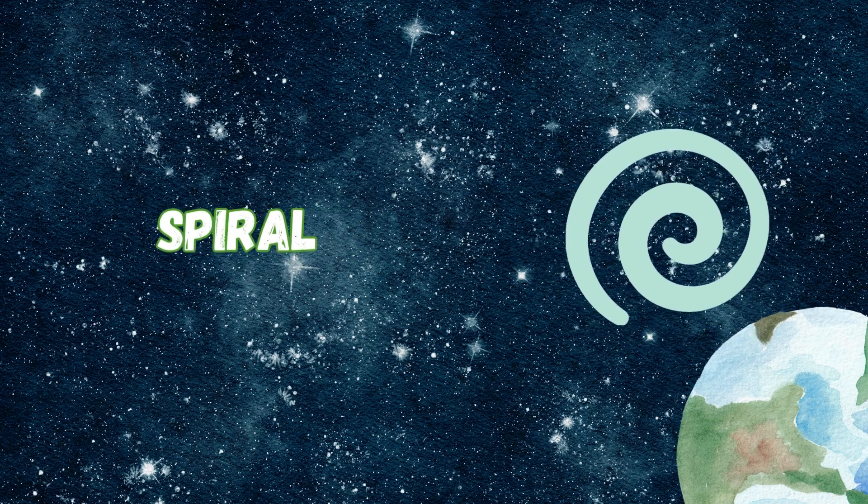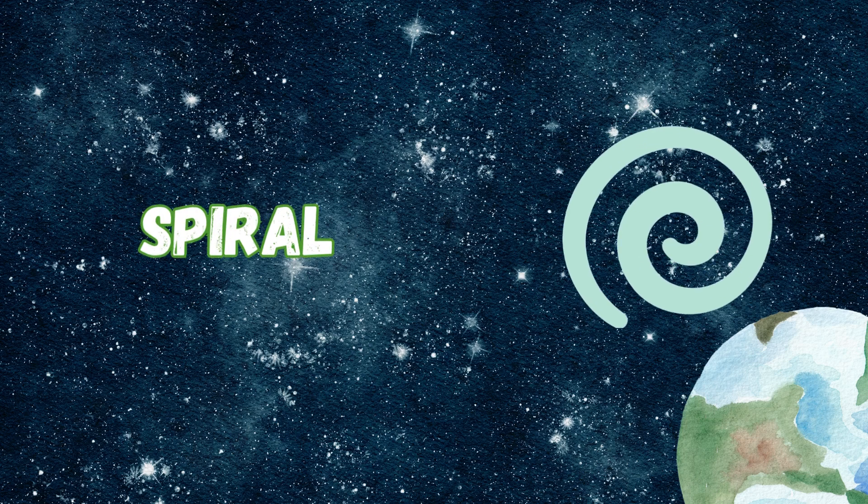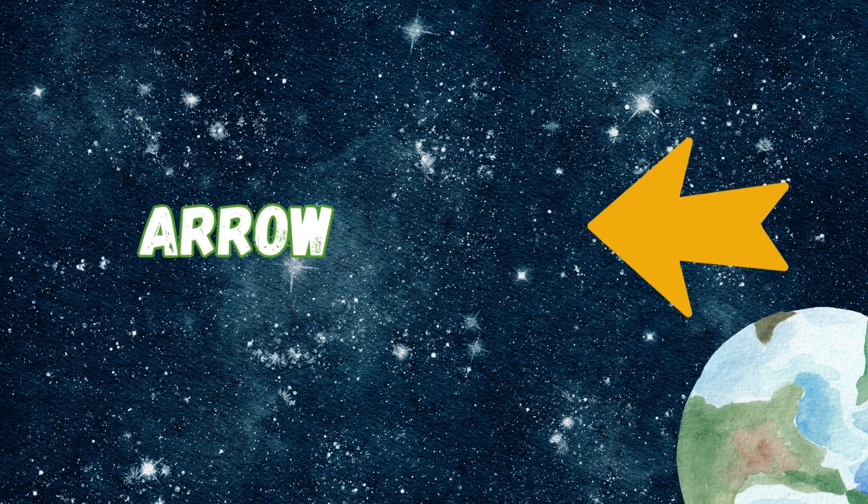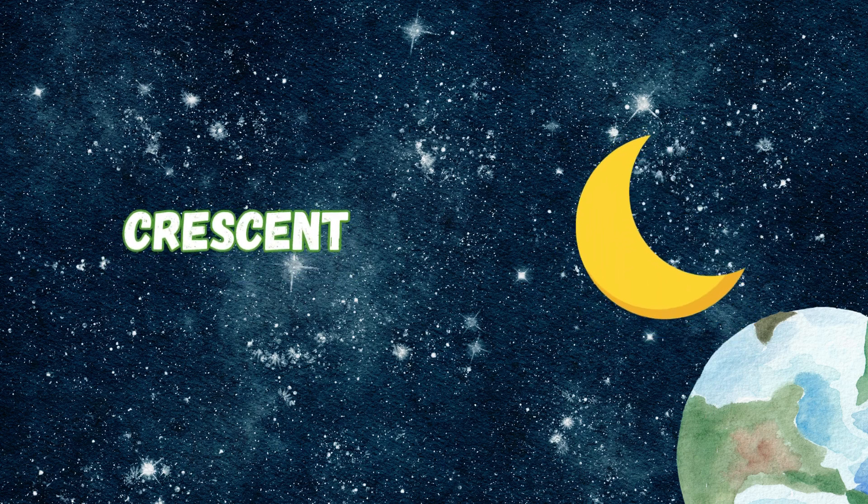Spiral spins like a snail's shell, round and round, a magic spell. Arrow points to the way we go. It shows us paths, high and low.